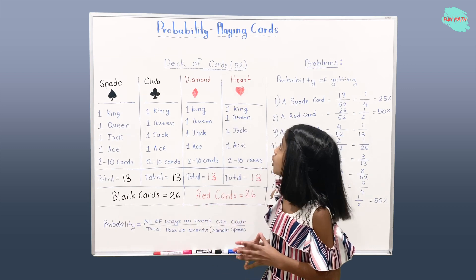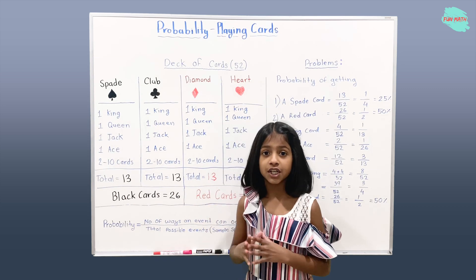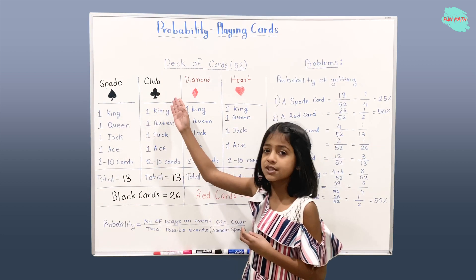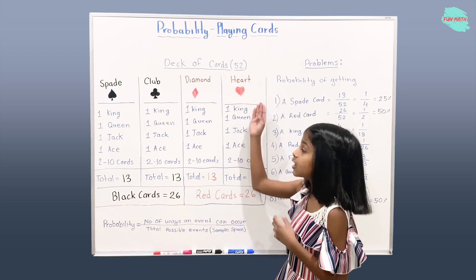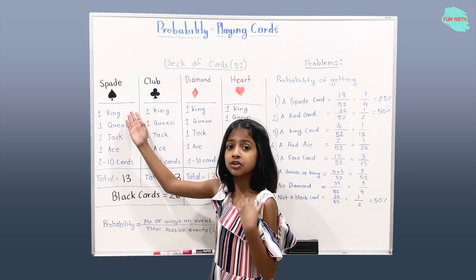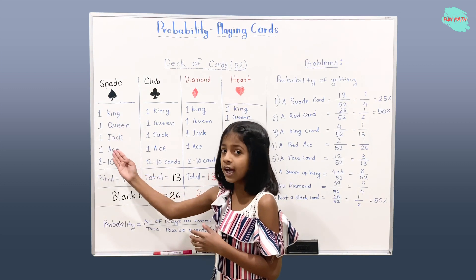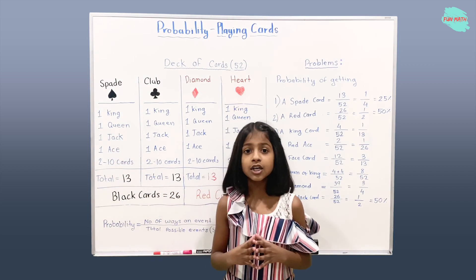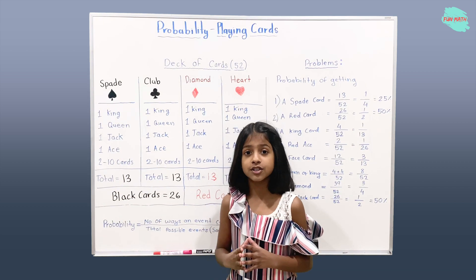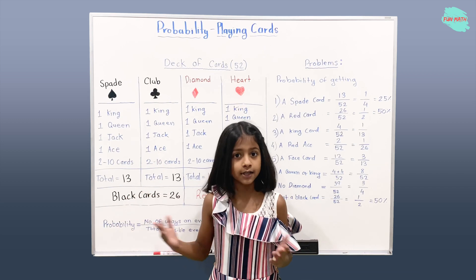In the deck of cards we have 52 cards. We have four suits: Spade Suit, Club Suit, Diamond Suit and Heart Suit. In Spade Suit we have one King, one Queen, one Jack, one Ace and cards from 2 to 10. In total we have 13 Spade Cards.